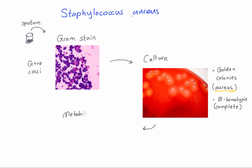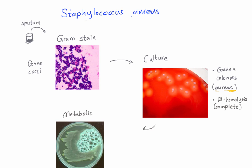Third, we look at the metabolic characteristics — specifically whether it has the catalase enzyme. Catalase breaks down hydrogen peroxide, producing gas which forms bubbles. So if you mix a colony of Staph aureus with hydrogen peroxide, it's going to form bubbles — that's a catalase positive test. And also remember that it's coagulase positive.